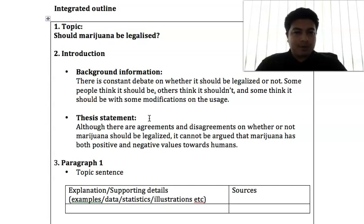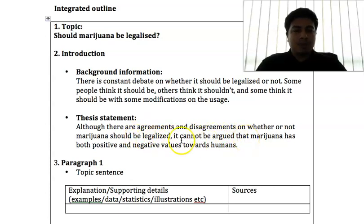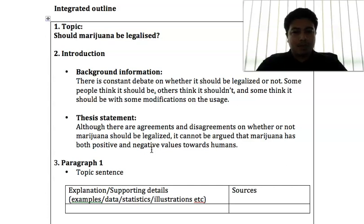An example of a thesis statement: after discussing background information about marijuana and the many debates, the thesis statement reads: 'Although there are agreements and disagreements on whether or not marijuana should be legalized, it cannot be argued that marijuana has both positive and negative values towards humans.' This signals to the reader what the coming paragraphs will cover — the positive and negative values — and the conclusion will address whether it should be legalized.